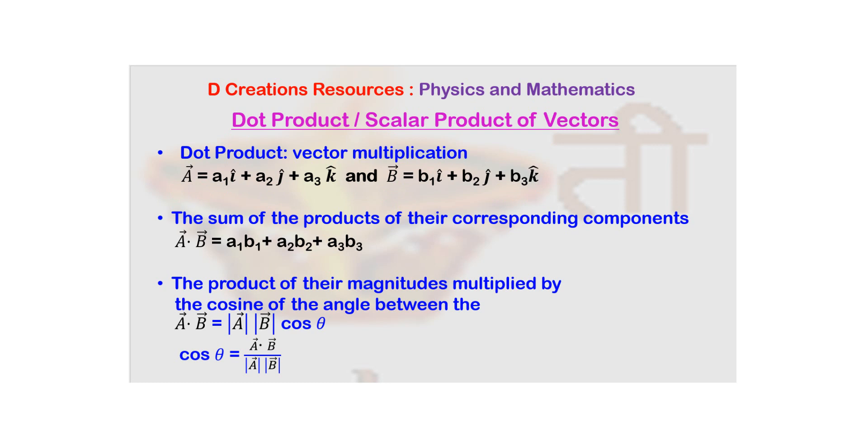And now you want to multiply these two vectors. So how do we do it? There are two ways: there is dot product as well as cross product. Now since the name dot product, you can understand that basically when you denote it, this is how it looks: A bar dot B bar.